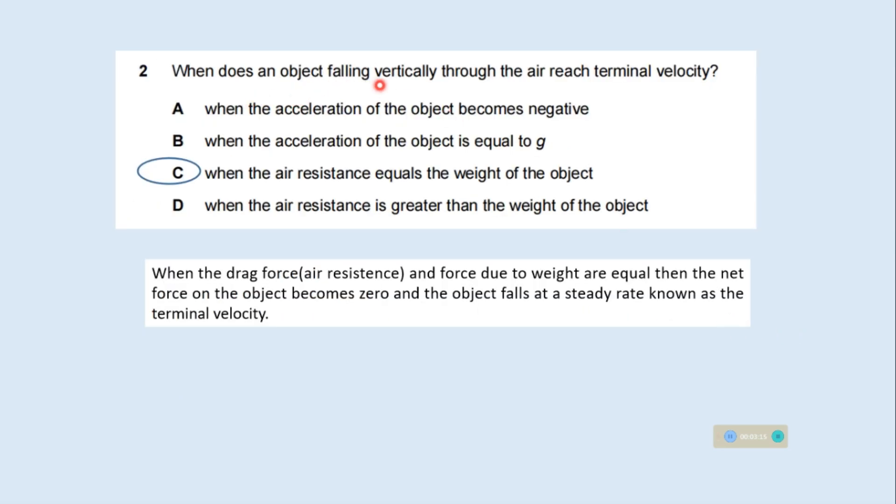When does an object falling vertically through the air reach terminal velocity? When the drag force, air resistance and force due to weight are equal, then the net force on the object becomes zero and the object falls at a steady rate known as terminal velocity. So option C is the correct one. I suggest you please watch my detailed video where we have discussed terminal velocity and drag force and free fall of objects.